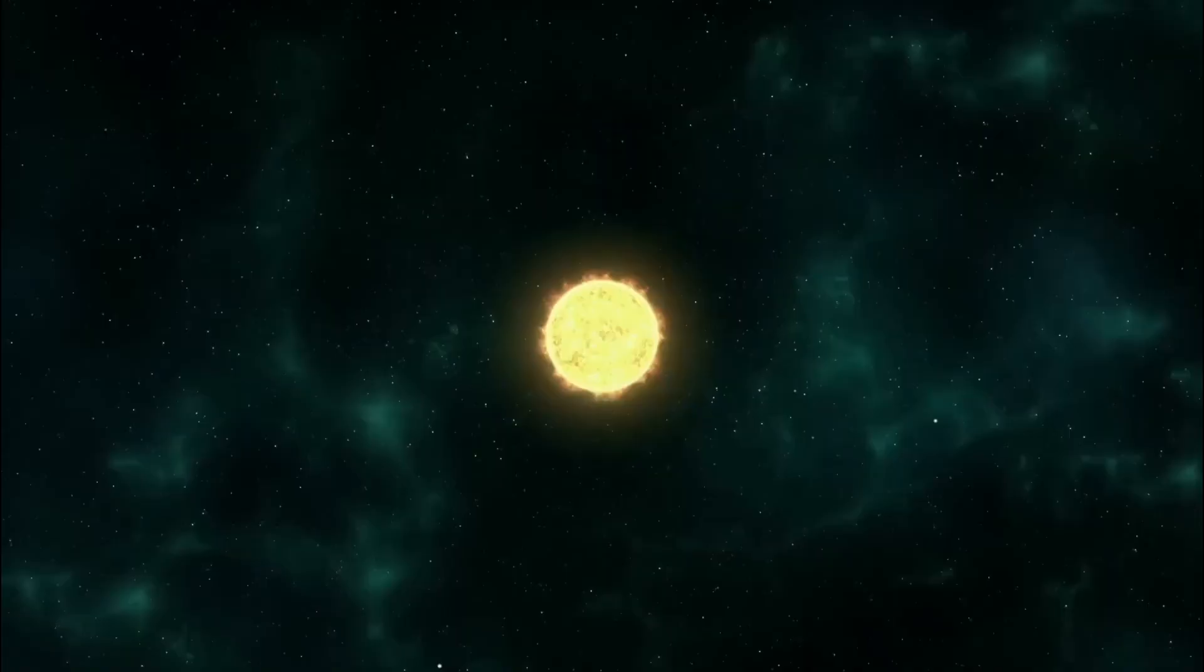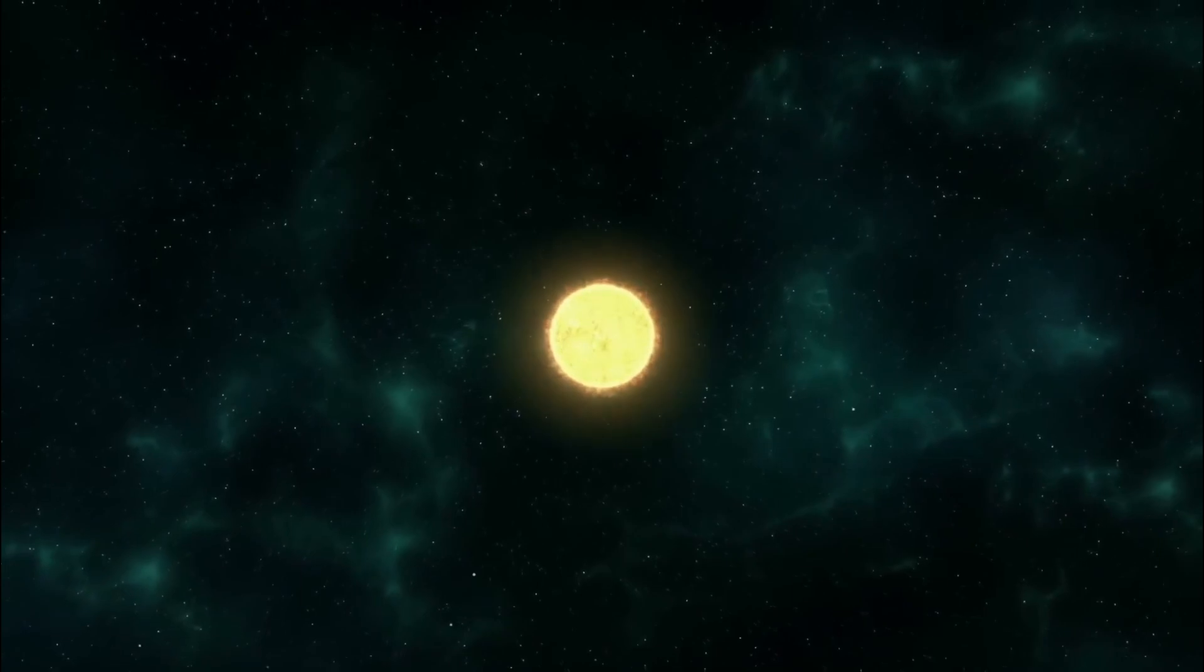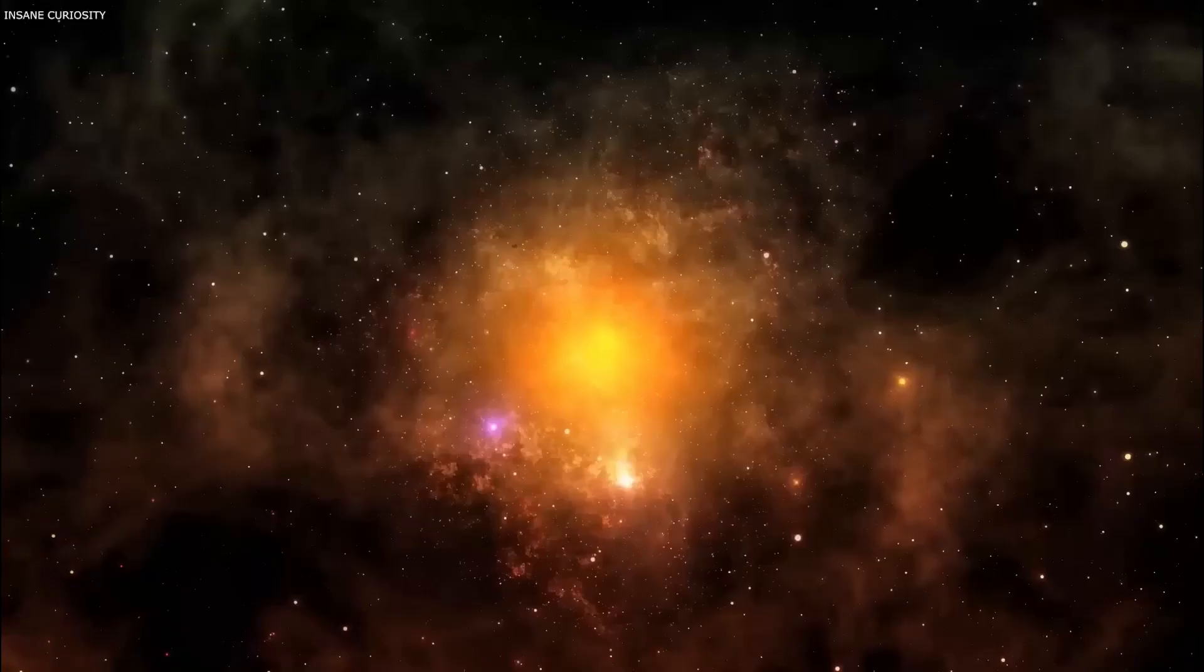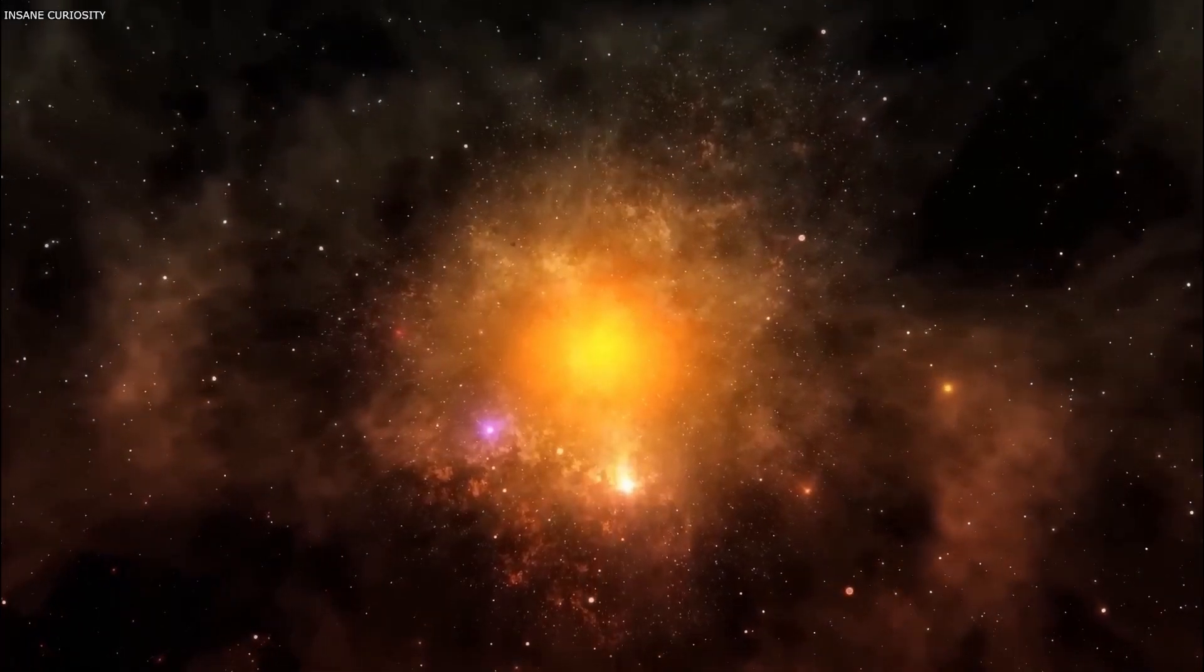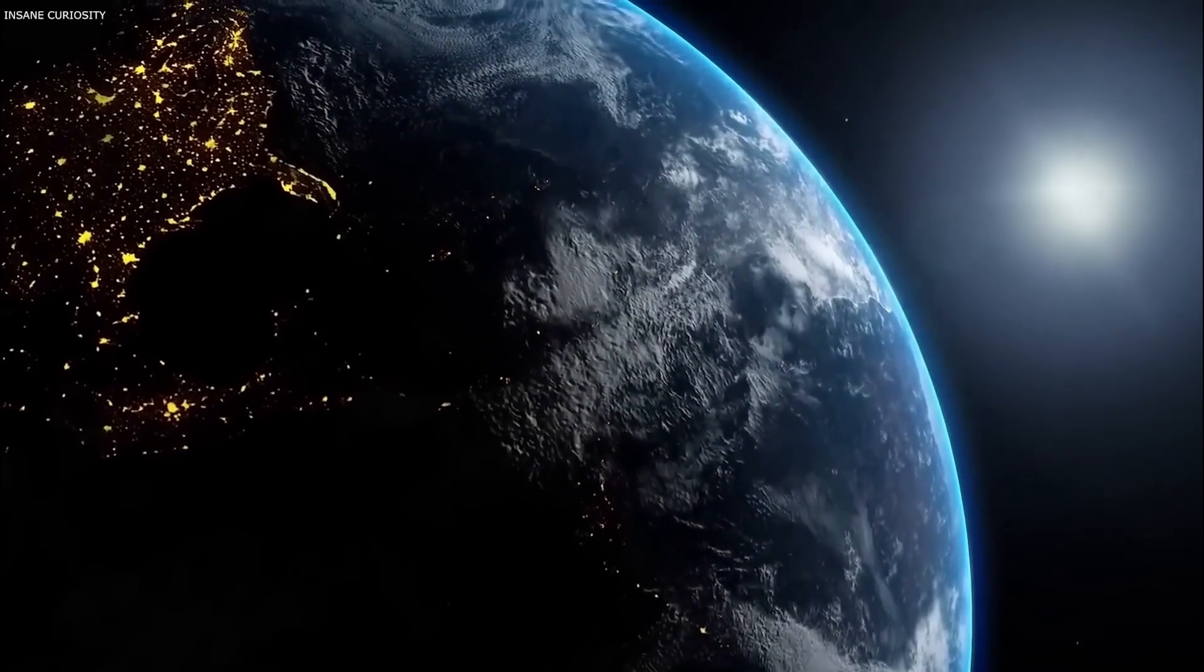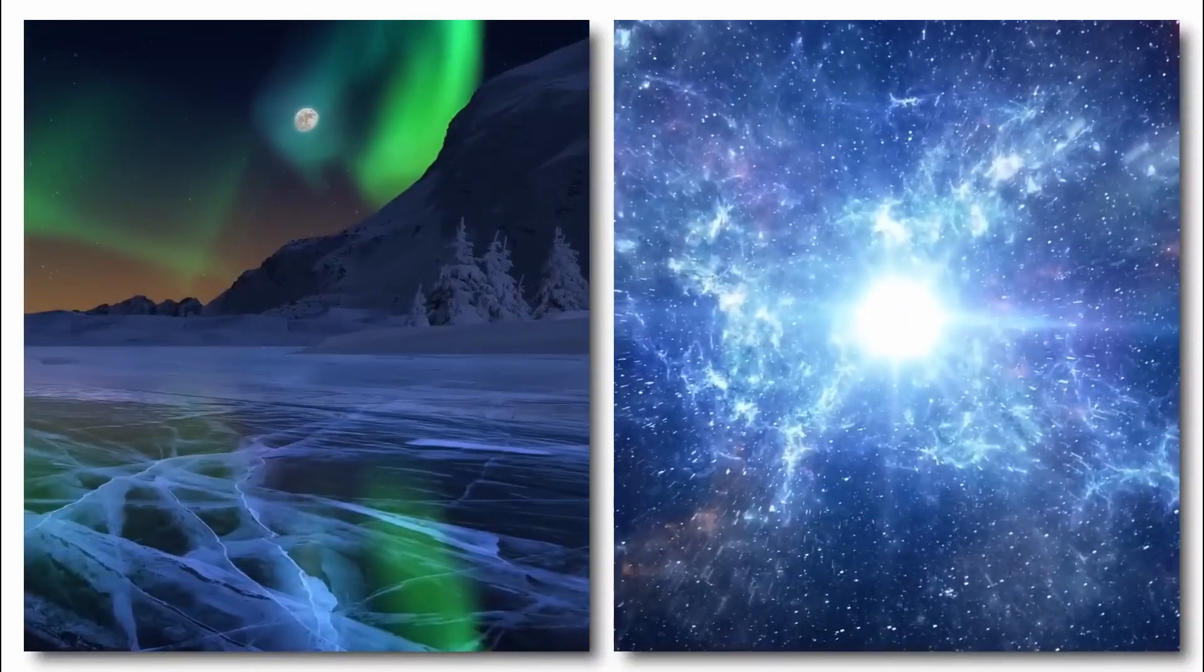Eventually, as their hydrogen fuel depletes, they transit into the red giant phase, characterized by a rapid increase in temperature and brightness. The red giant phase witnesses a dramatic surge in energy output before culminating in a catastrophic explosion. They shed their outer layers in a dazzling display known as a supernova.